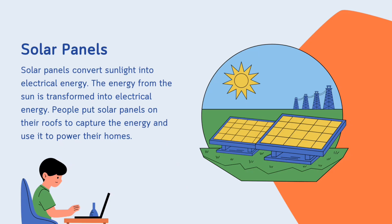Now we will move on to our next example: solar panels. A solar panel converts sunlight into electrical energy. The energy from the sun is transformed into electrical energy. People put solar panels on their roofs to capture the energy and use it to power their homes.